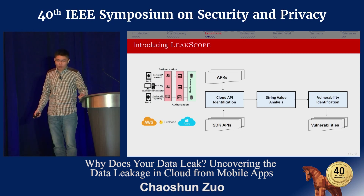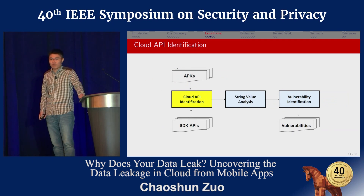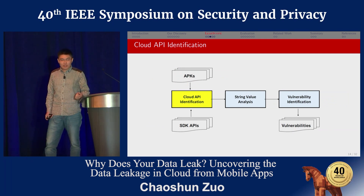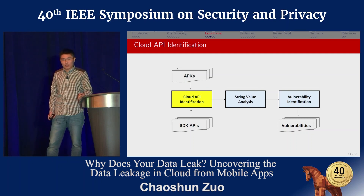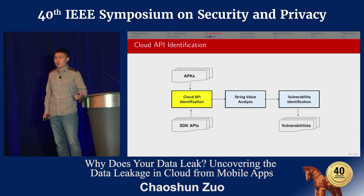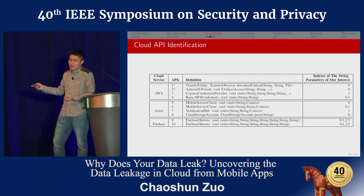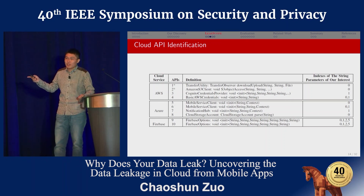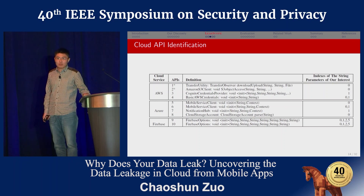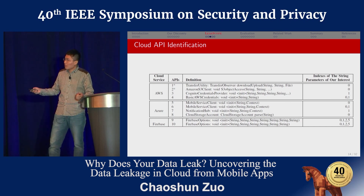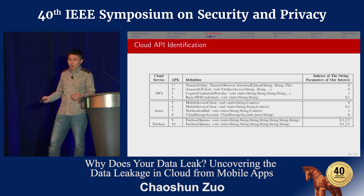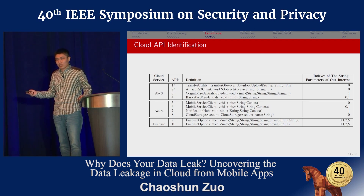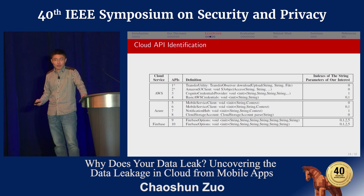LeakScope consists of three components: cloud API identification, string value analysis, and vulnerability identification. For cloud API identification: the cloud APIs that take a key as a parameter are well documented — we carefully read all documentation from all cloud providers and found all such APIs. To handle obfuscation, we implemented a hash function to generate signatures for those cloud APIs and all functions in the mobile app, then match them by comparing hash values. The algorithm is fully explained in the paper.